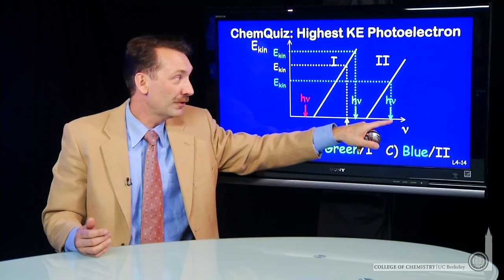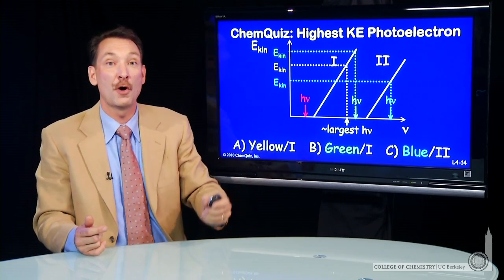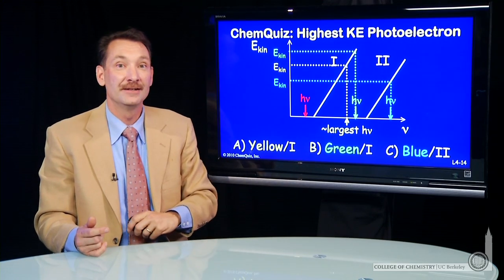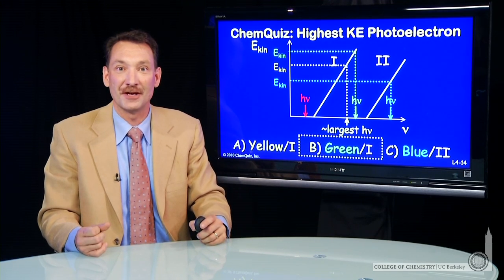So a blue photon, even though it's the highest energy, is striking a higher threshold metal, resulting in lower kinetic energy photoelectrons. So green light on metal one will give the highest energy electrons ejected from this metal system.